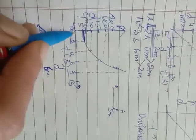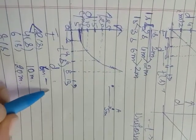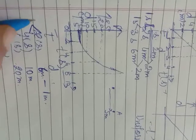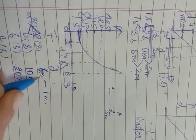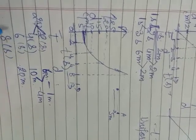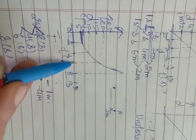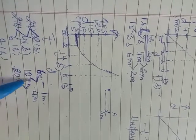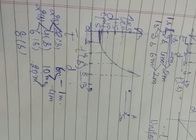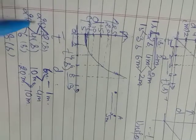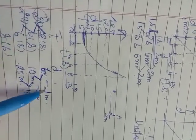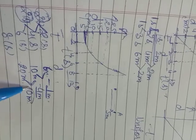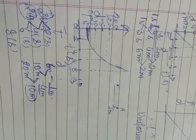In the first two seconds the distance traveled is only 1 meter — from 5 meters to 6 meters. From 2 to 4 seconds, the time is again two seconds but the distance traveled is about 4 meters. From 4 to 6 seconds, the time is again two seconds but the distance traveled is 10 meters — from 10 meters to 20 meters. So in equal intervals of time the distances covered are 1 meter, 4 meters, and 10 meters respectively.